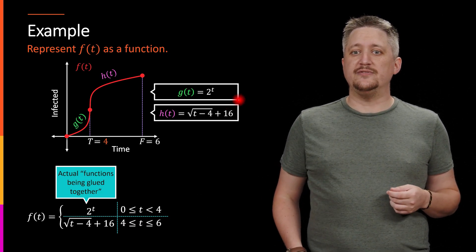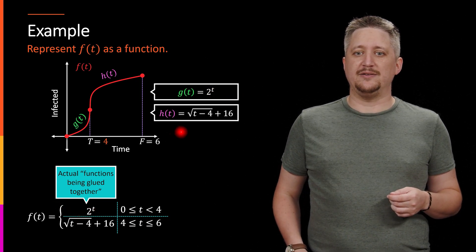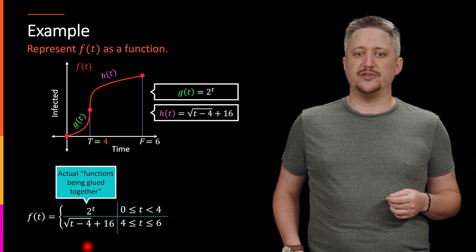So we have G of T, which is 2 to the T, so that's one of them. And then we have H of T, which is the square root function, that's the other one.